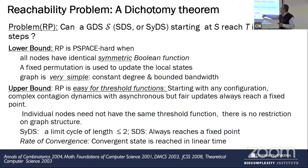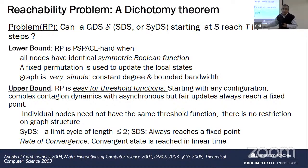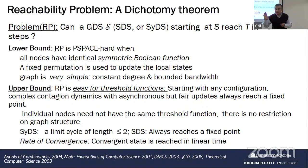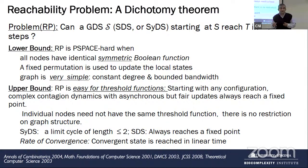The reason threshold functions make things easy is the following: if you start from any configuration, you can essentially reach a quasi-fixed point — a fixed point or a period-2 cycle. That's why the result holds. This does not happen for symmetric functions in general. In some ways, what's called the transient in the system is short for threshold functions.